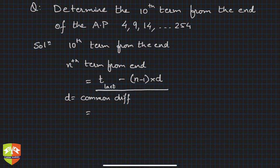What is last term? 254. What is n? 10 minus 1 into d. What is d in this case? If you see, 9 minus 4, consecutive term difference is d. So what is the d value? 5.